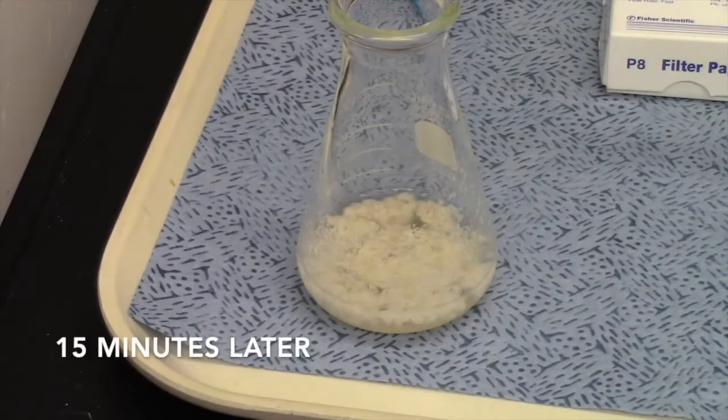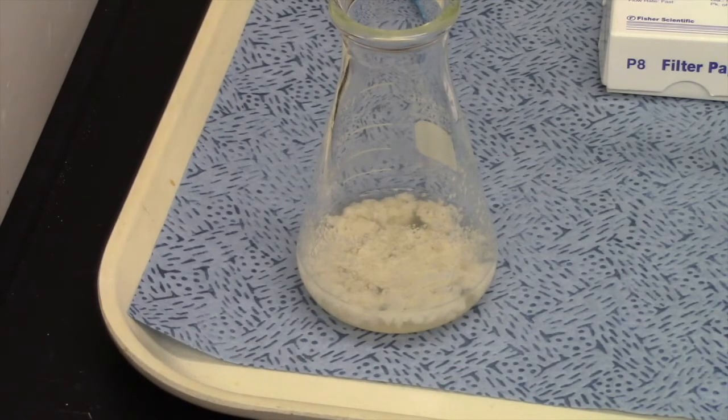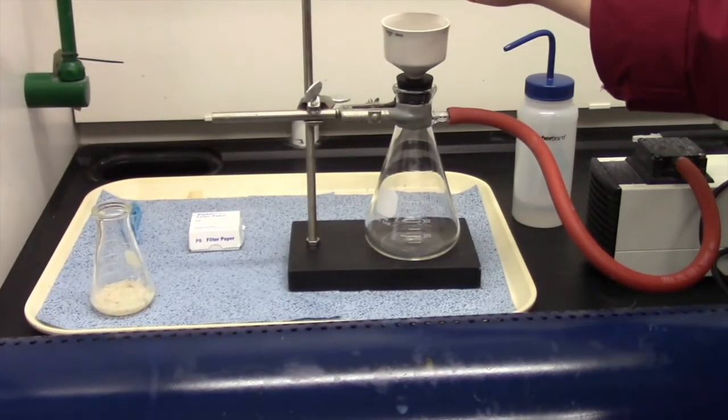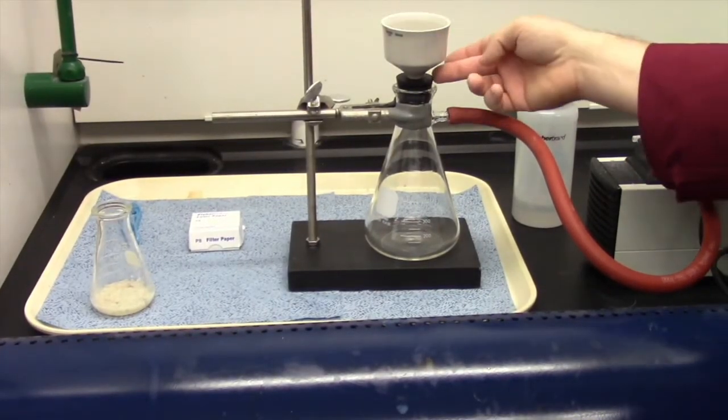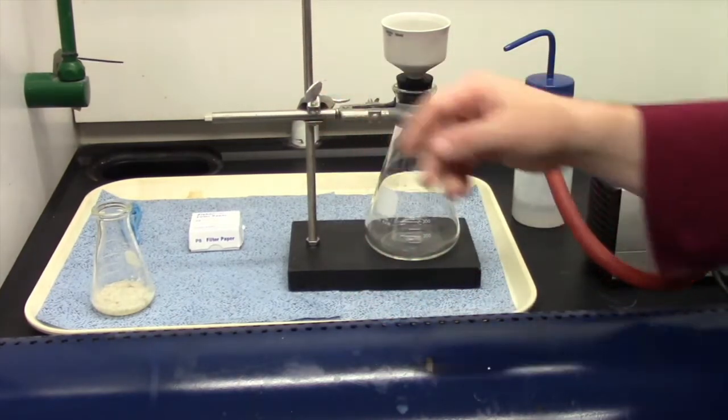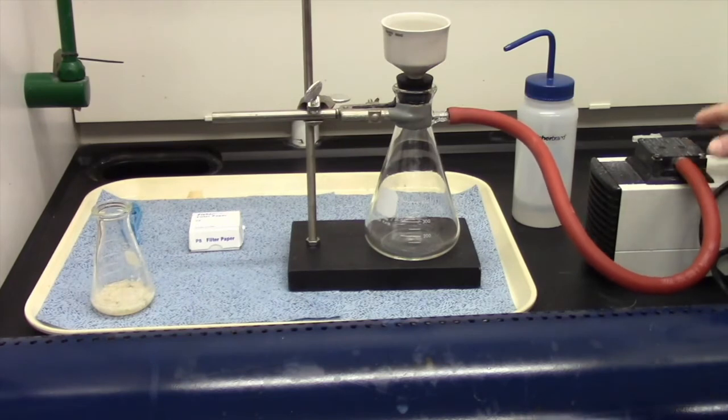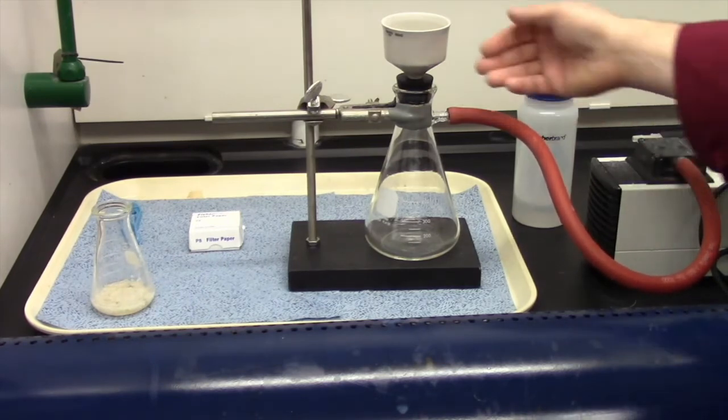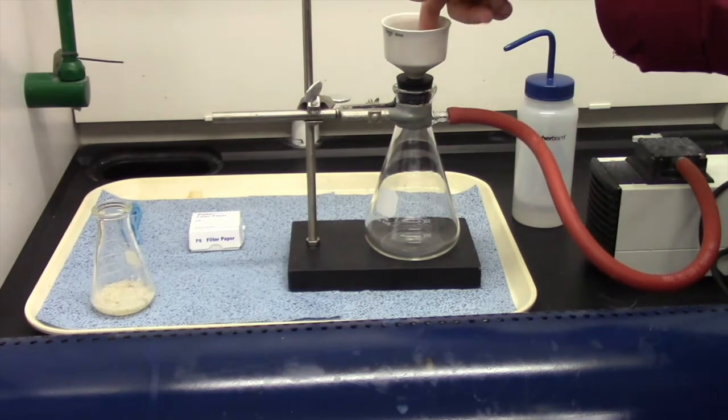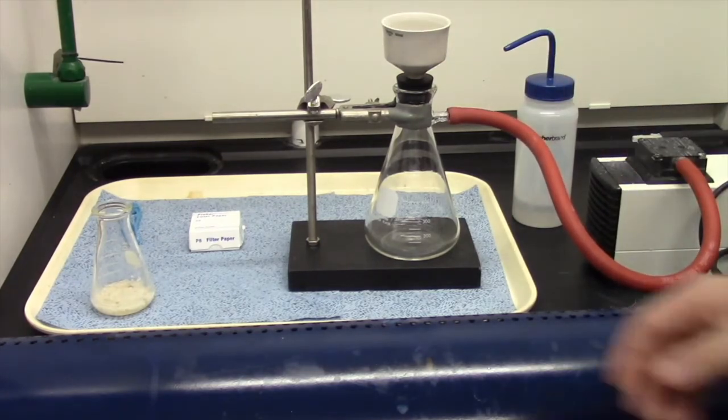Alright guys, we've waited about 15 minutes and as you can see, our flask is now filled with soap. Isn't that kind of cool? That is soap floating right there in suspension. Now here we have what's called a Buchner funnel. It's a rubber stopper, it's a vacuum flask, and of course a clamp stand and a clamp. And this bad boy right here is a vacuum pump. It's going to pull the air out of here, it's going to pull the air through the funnel, which is going to help us filter our sample a whole lot faster.